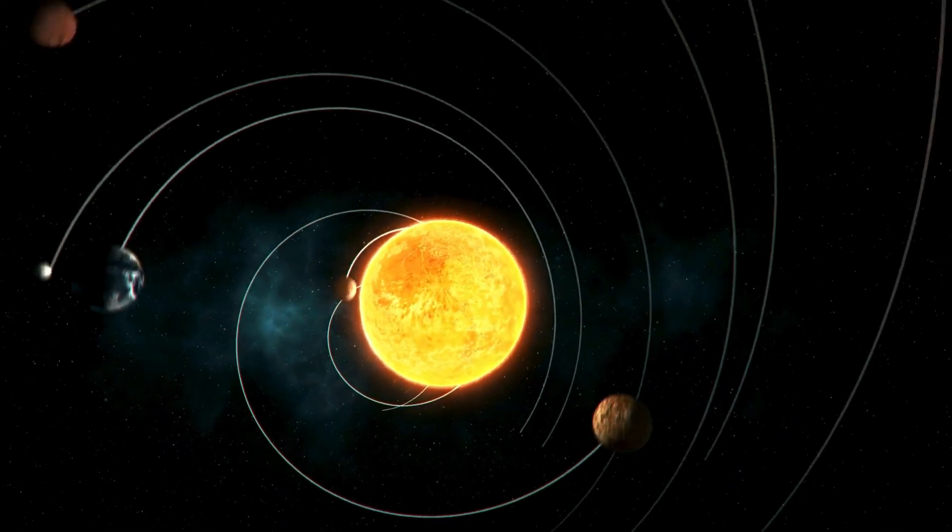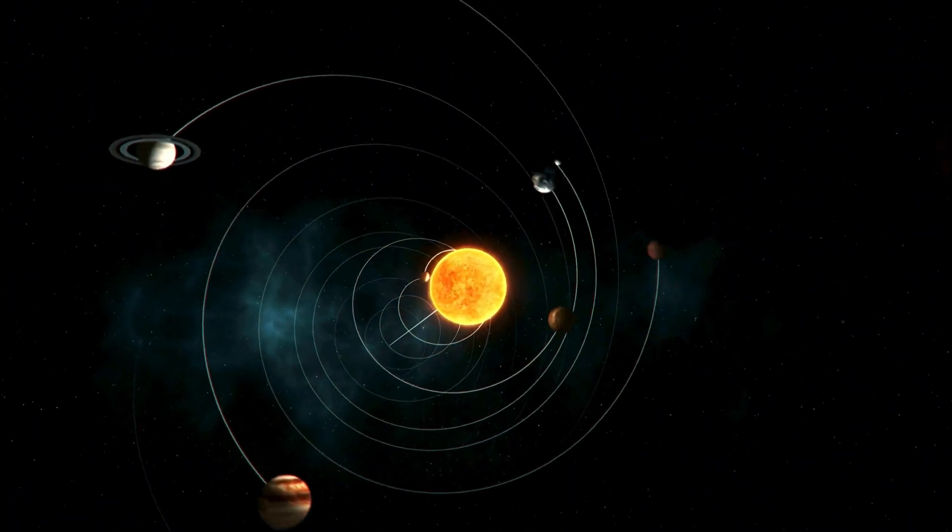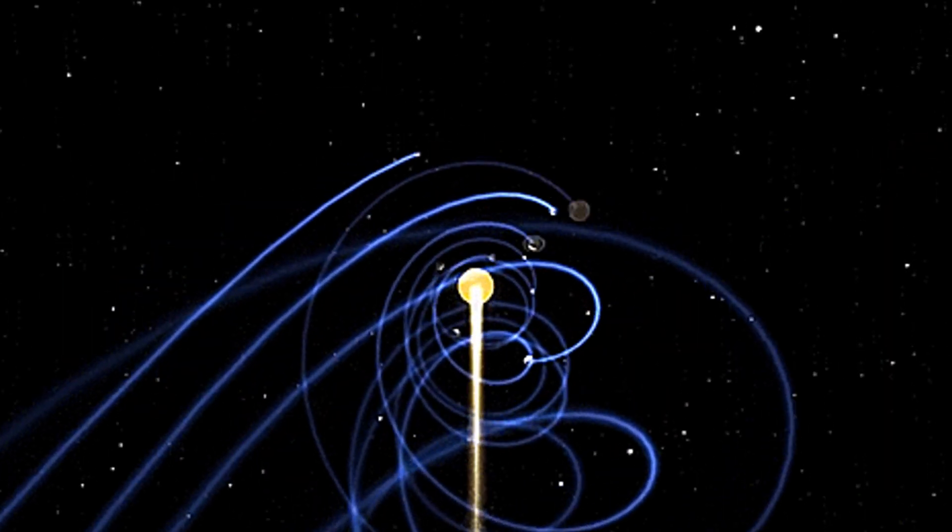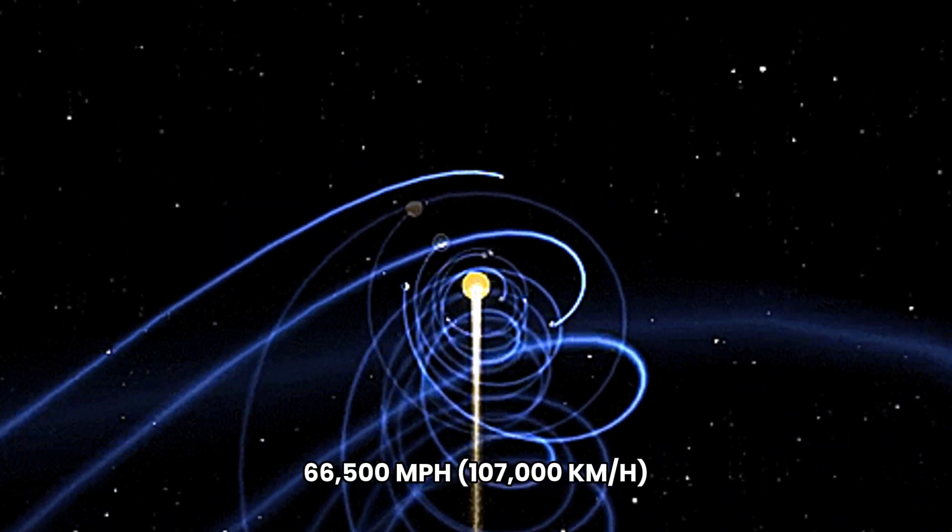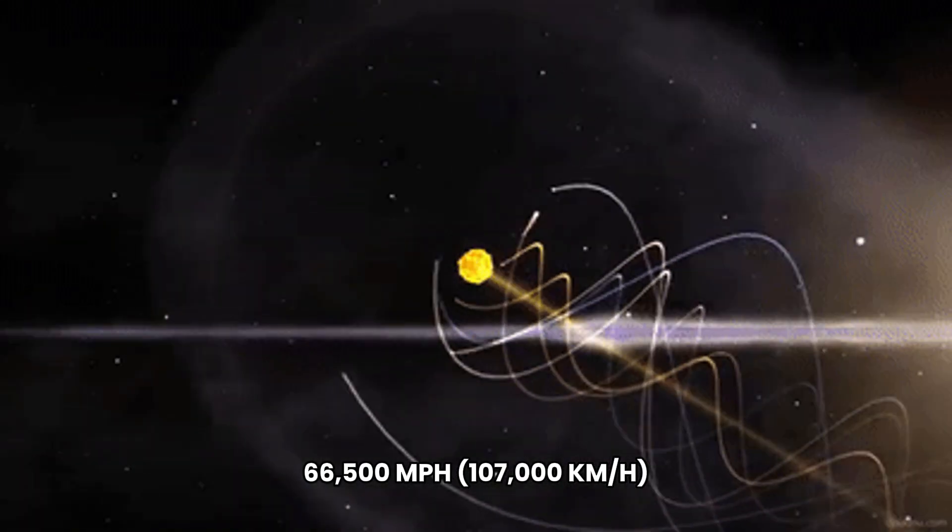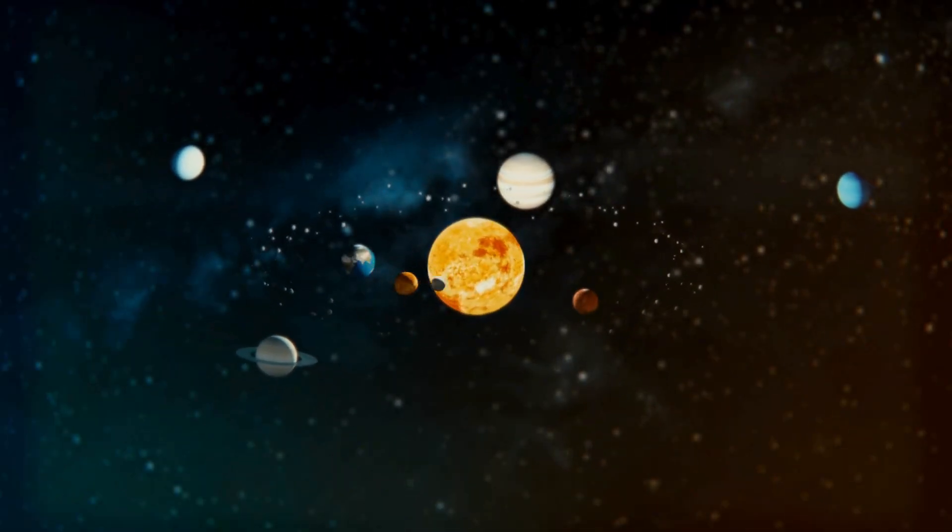Zoom out and you'll see Earth isn't just a rock looping a star. It's part of a restless solar system that never stops moving, racing around the sun at about 66,500 miles per hour, 107,000 kilometers per hour. And that's only the first layer.